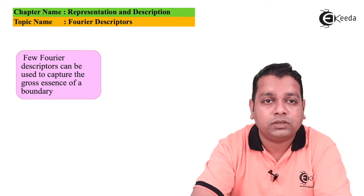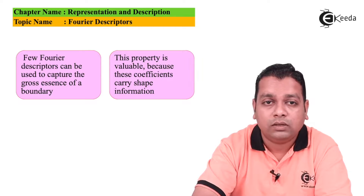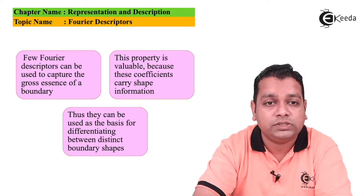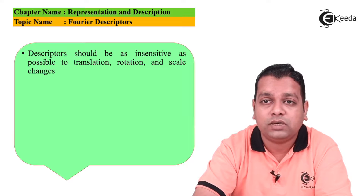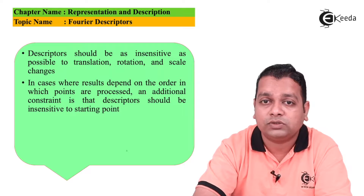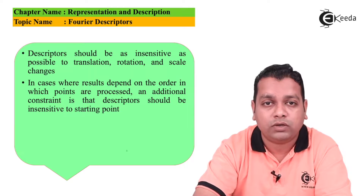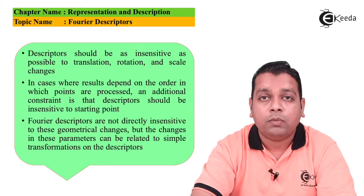A few Fourier descriptors can be used to capture the gross essence of the boundary, and this property is very valuable because these coefficients carry the shape information and can be used as the basis for differentiating between distinct boundary shapes. The descriptors should be as insensitive as possible to translation, rotation, and scale changes, and also insensitive to the starting point and the order in which points are processed.